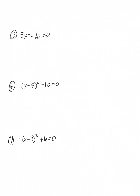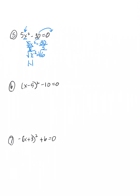Number five: isolate the quadratic term — get x squared by itself by moving the other piece over, giving equals 30. Divide by 5, giving x squared equals 6. Bring in the square root — absolute value of x equals square root of 6. Square root of 6 is not a clean number, so we leave it as √6. Bring in the plus or minus and drop the absolute value bars. x equals plus or minus √6.